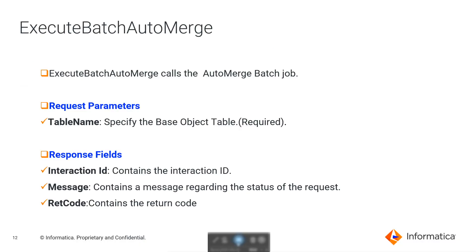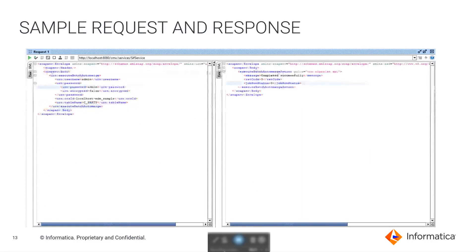The next API we have is ExecuteBatchAutoMerge. This API calls the automerge batch job. From the request parameters, we can see that we need to provide table name, which is the BaseObject table name and which is the required field. From the response fields, we will have interaction ID, message, and return code. From the sample request and response, we can see that we have provided username, password, ORSID, and table name — that is the BaseObject table name upon which you want to execute the automerge job. On running this request, we can see from the response that the job has been completed successfully.